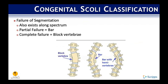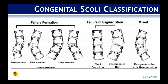There's also failure of segmentation, which similarly exists along a spectrum. A partial failure leads to a bar; a complete failure leads to block vertebrae. There's also a mixed type picture — a bar with a hemivertebra. Illustrations show the semi-segmented, fully segmented, and failure of segmentation patterns as opposed to failure of formation, as well as the mixed pattern.